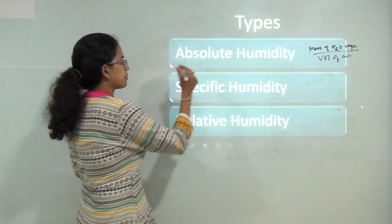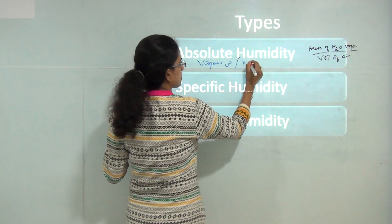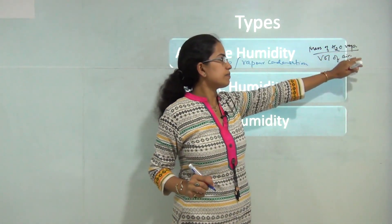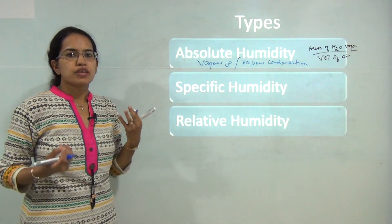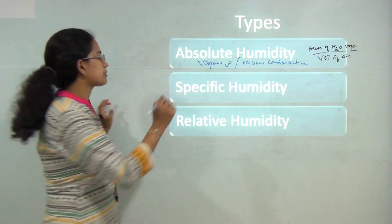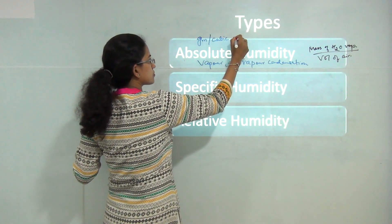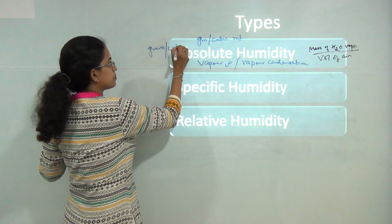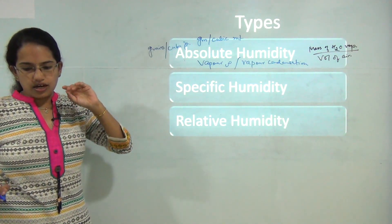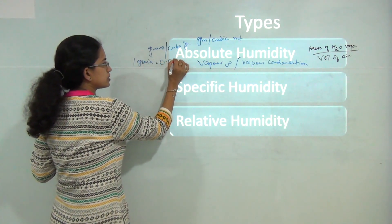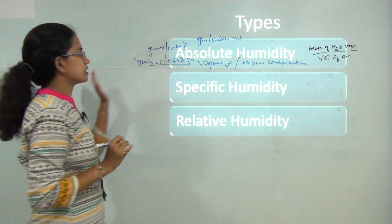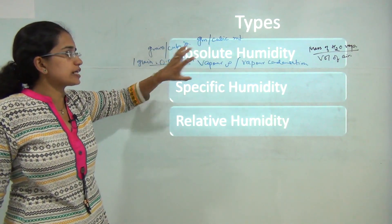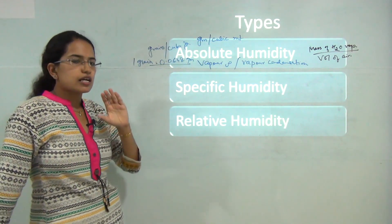Absolute humidity is also known as vapor density and vapor condensation. Since it's the mass of water vapor present in a volume of air, the unit for absolute humidity would be grams per cubic meter. In British units, it would be grains per cubic foot, where one grain is equal to 0.0648 grams. So absolute humidity neglects the pressure.